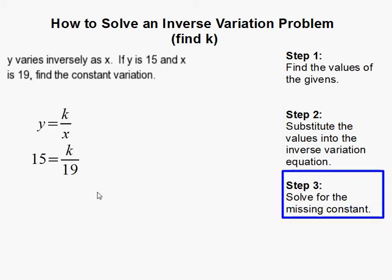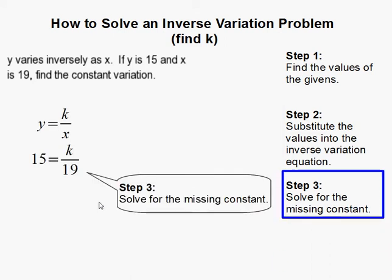Lastly, we need to solve for the missing constant, which in this case is to get k by itself. So we multiply both sides by 19, and that gets rid of this, moves it over here, and it gives us k is equal to 285. And that completes the problem.